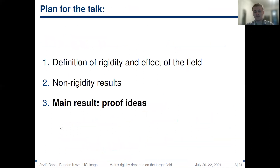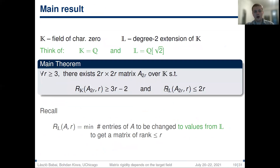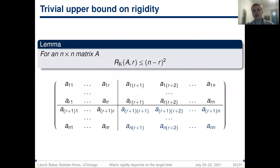Let me briefly discuss the key ideas behind our main result. Recall that we show that for any field K of characteristic 0 and any degree-2 extension L, there exists a sequence of 2r-by-2r matrices such that rigidity over K for target rank r is at least 3r − 2, and rigidity over L for target rank r is at most 2r. First, we argue that the trivial upper bound on rigidity gives an obstacle for a simple counting proof of this flavor.